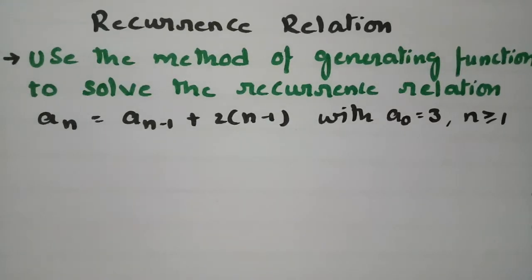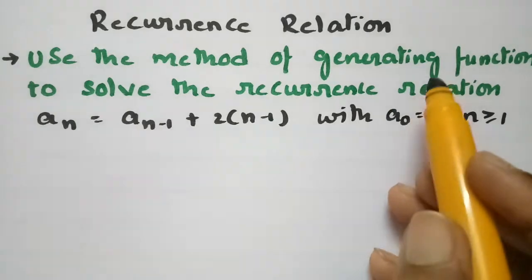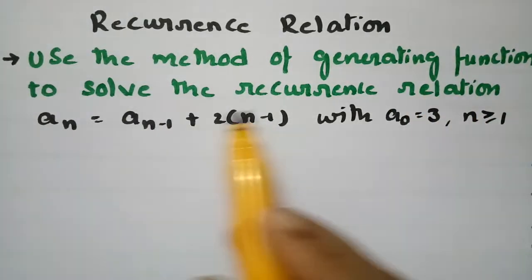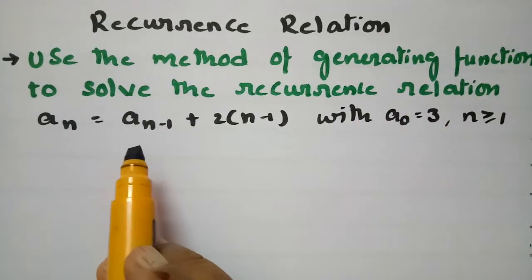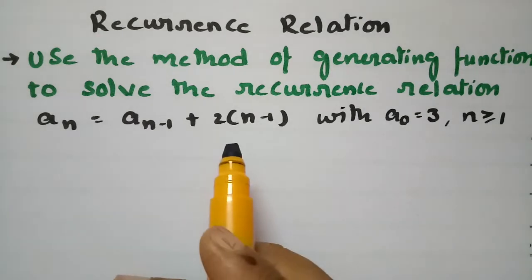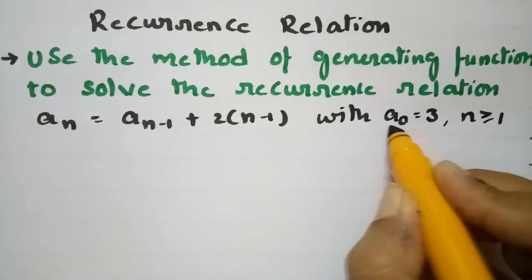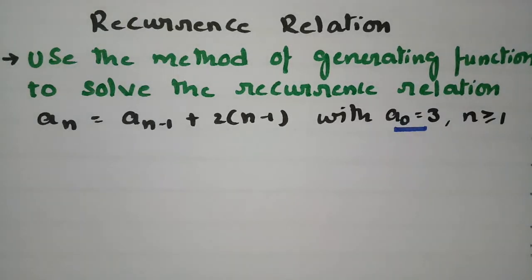In today's video I am going to use the generating function to solve recurrence relations. This topic is from recurrence relations and is related to discrete mathematics. We are going to solve the recurrence relation aₙ = aₙ₋₁ + 2(n−1), with the initial condition a₀ = 3, where n ≥ 1.